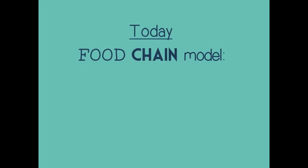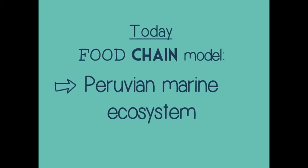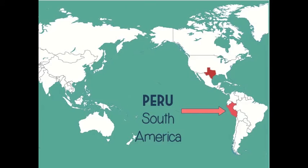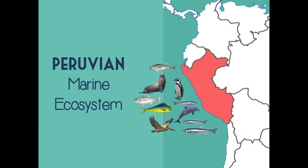Today we are going to study a food chain model from the Peruvian marine ecosystem. Do you know where Peru is? It's in South America. We know all species are important in the ecosystem, but did you know that some species are more important than others? Today's activity is going to help us understand about food chains and how some species have a bigger impact in the food chain and are more important than others.